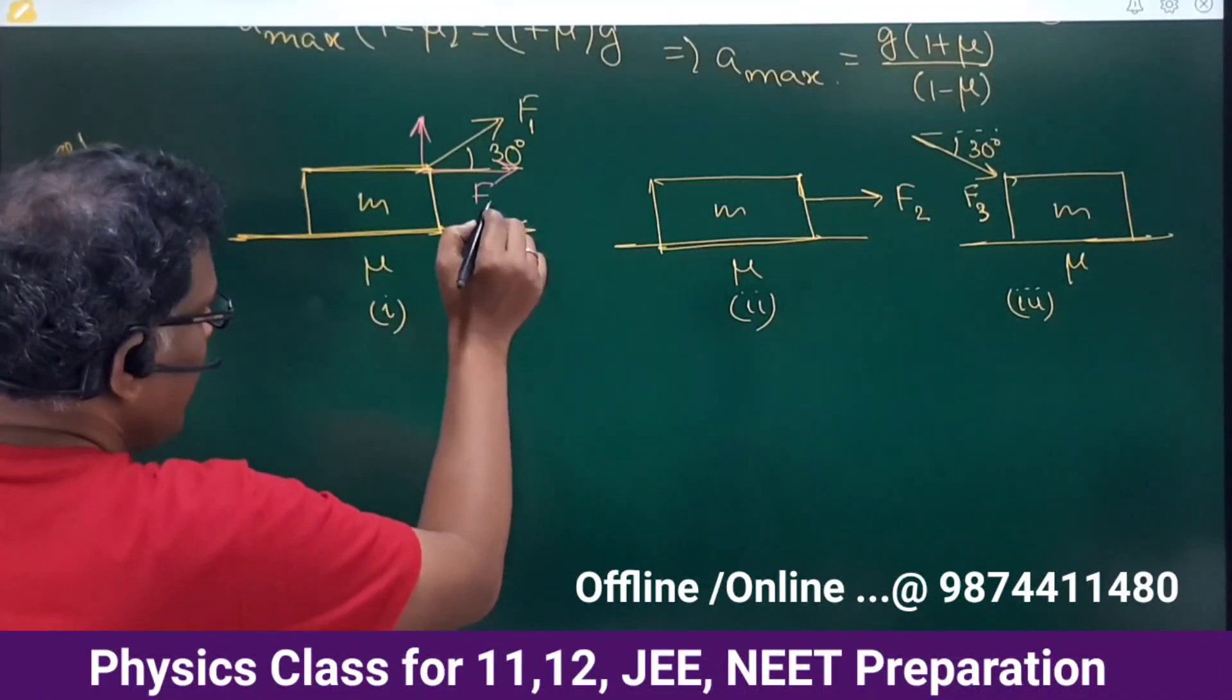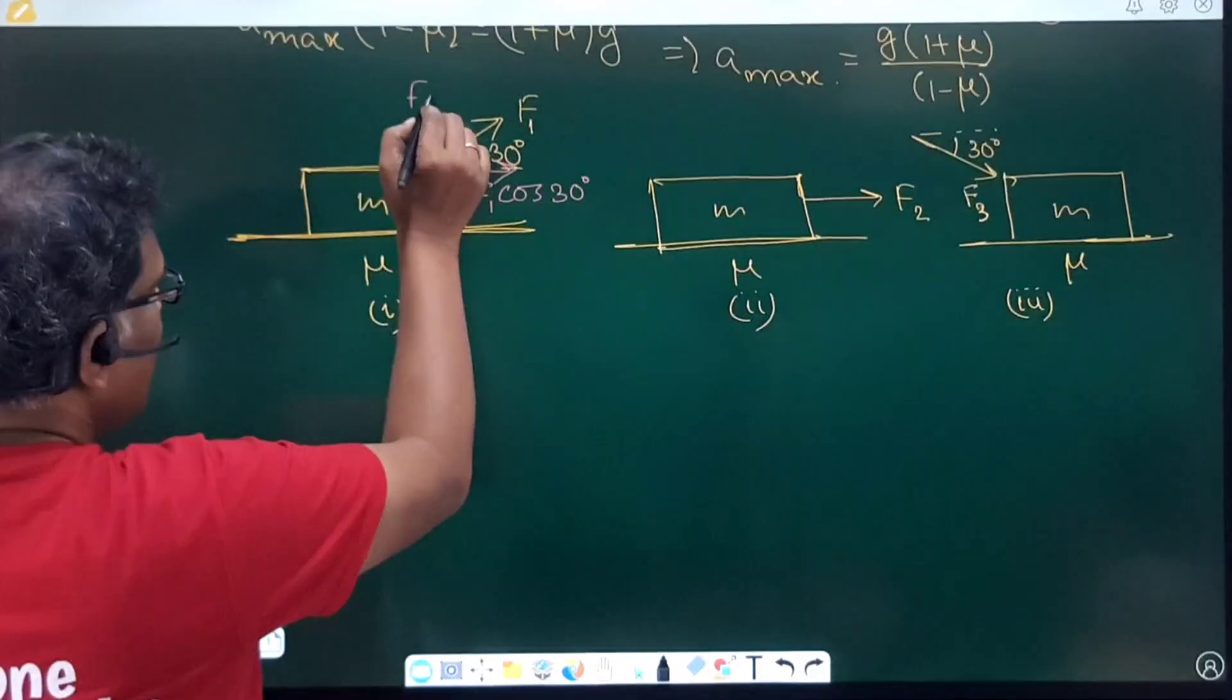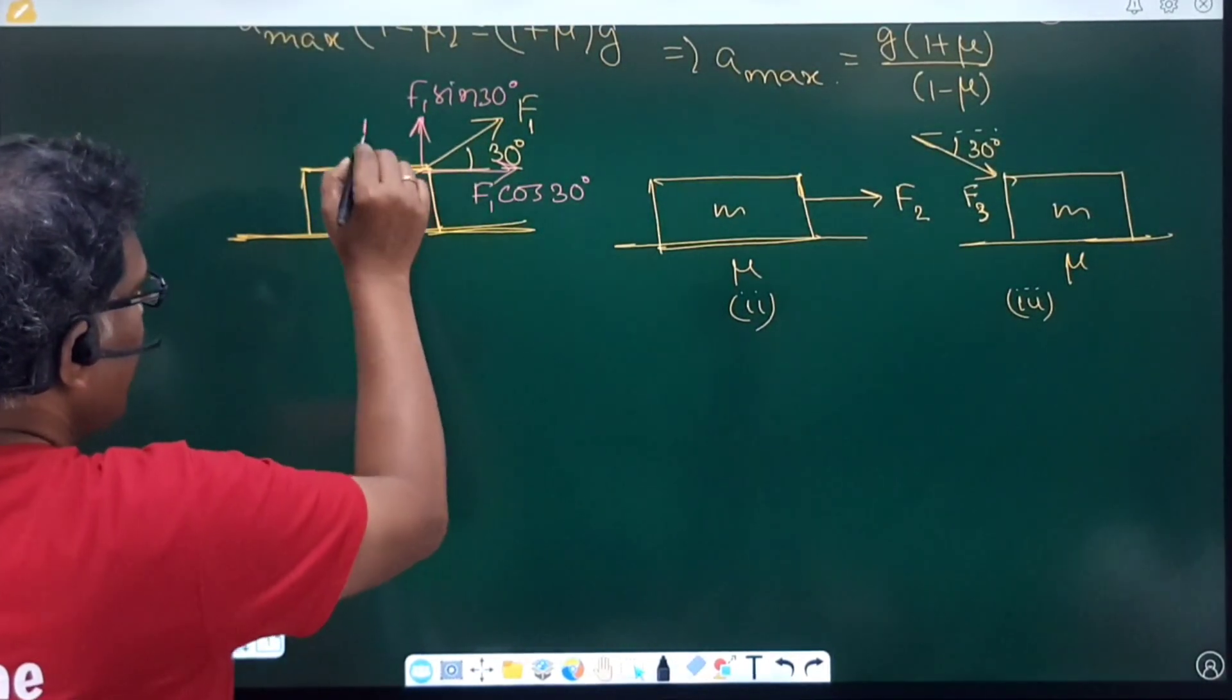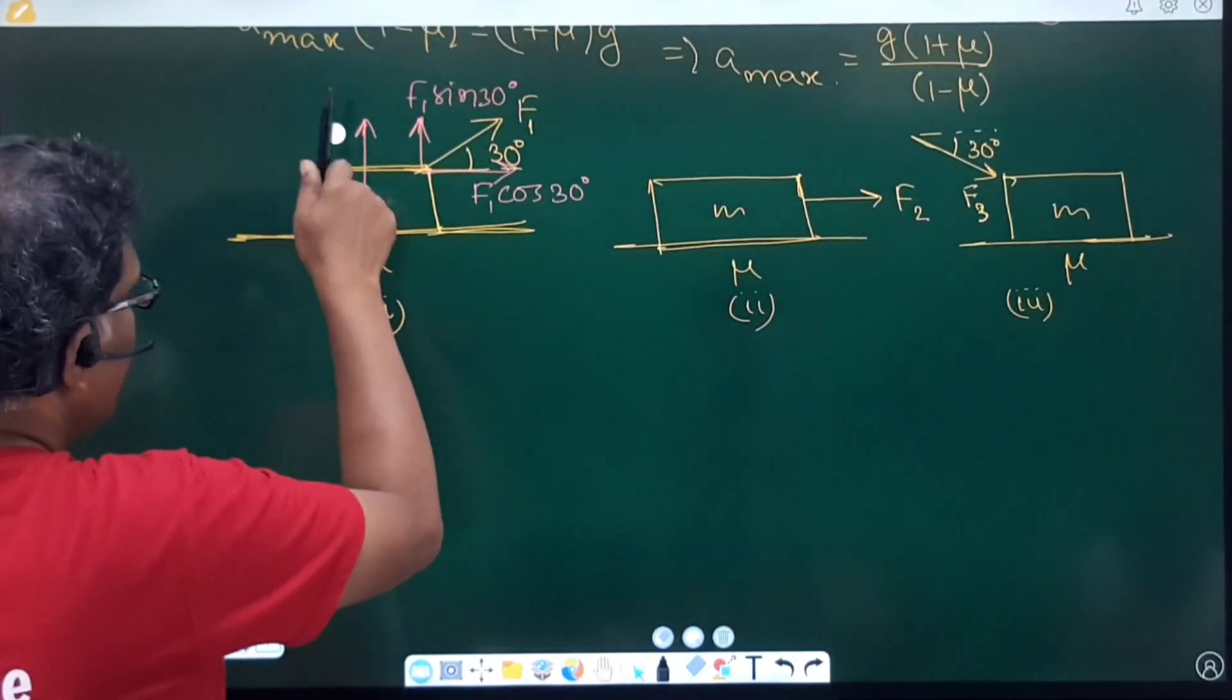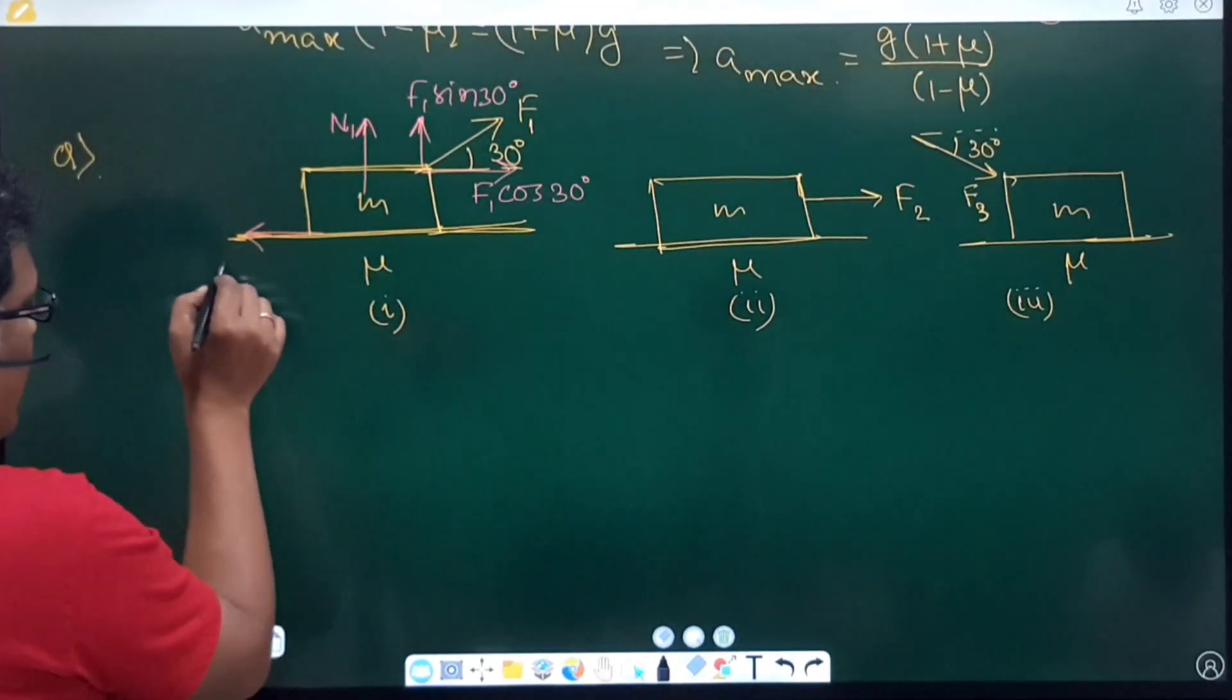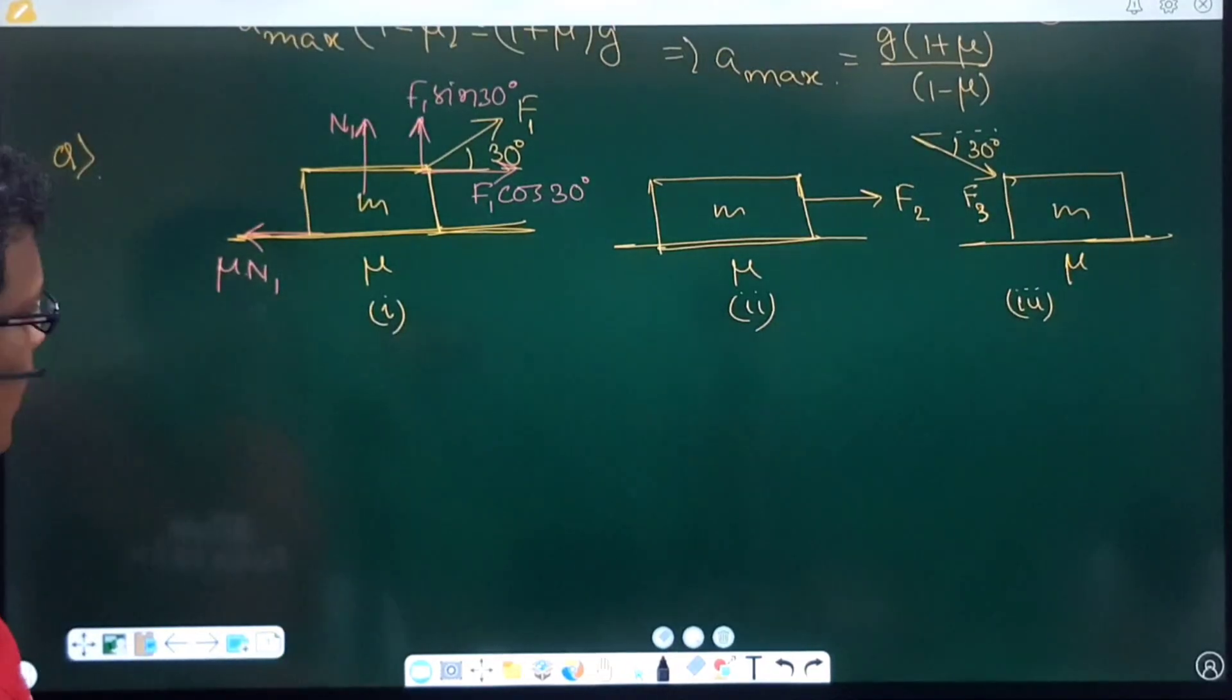So, this first case, the FBD suggests F1 cos 30 horizontal, F1 sin 30 vertical. And in first case, if I consider N1 be the normal contact force, then friction which can be used here, that is mu N1.